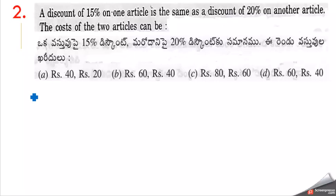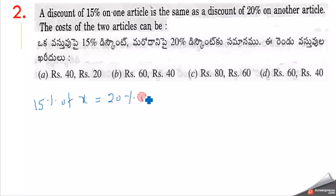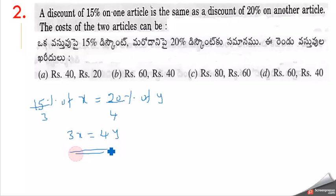The cost of the two articles: 15 percent of X is equal to 20 percent of Y. So 15X equals 20Y, which simplifies to 3X equals 4Y. So X to Y is 4 to 3. We choose the option where the first article is 80 and the second is 60.